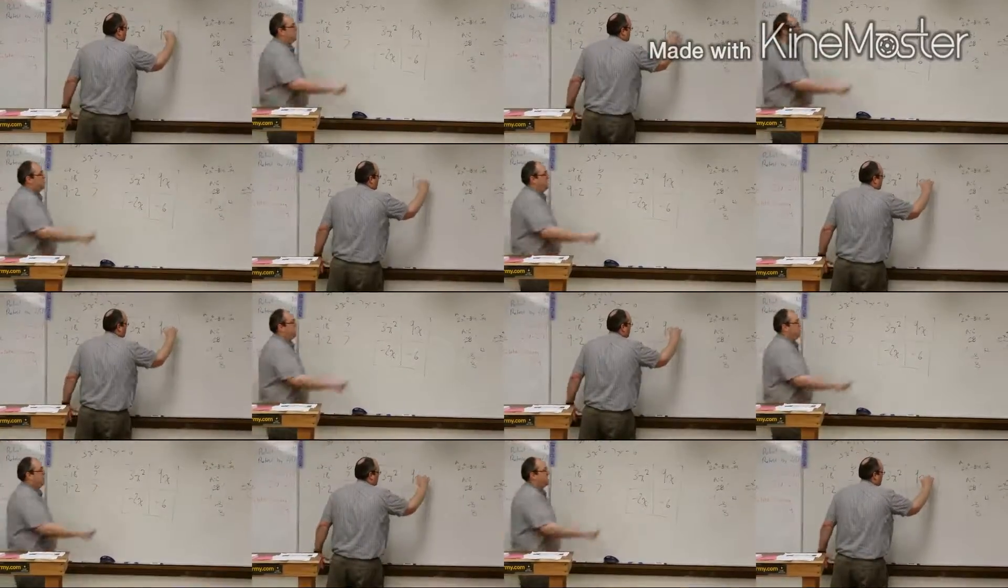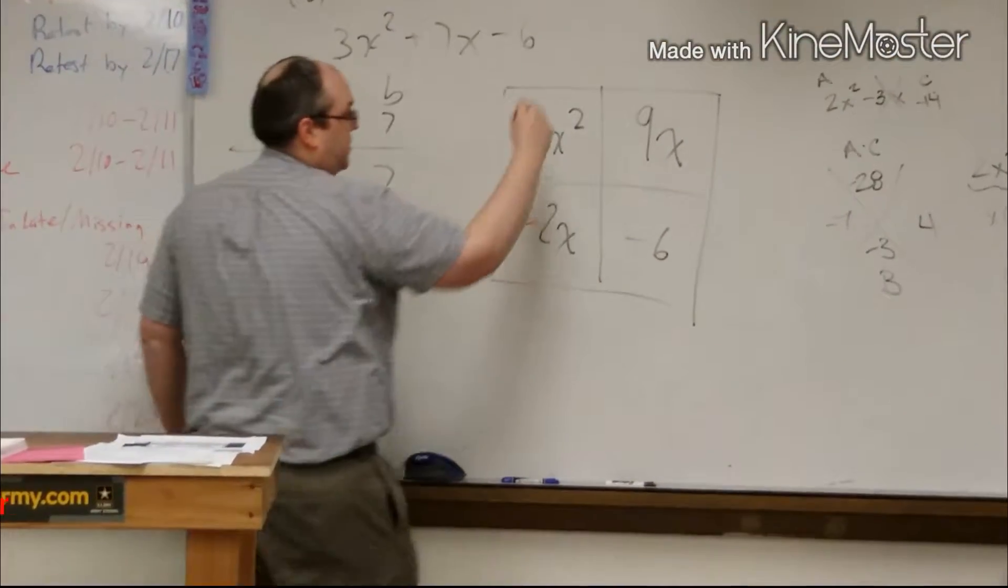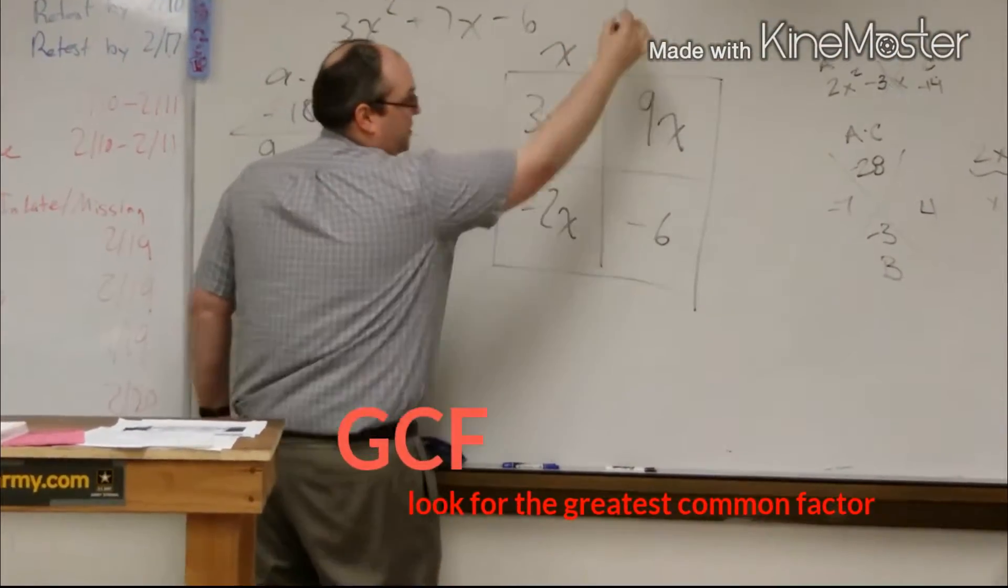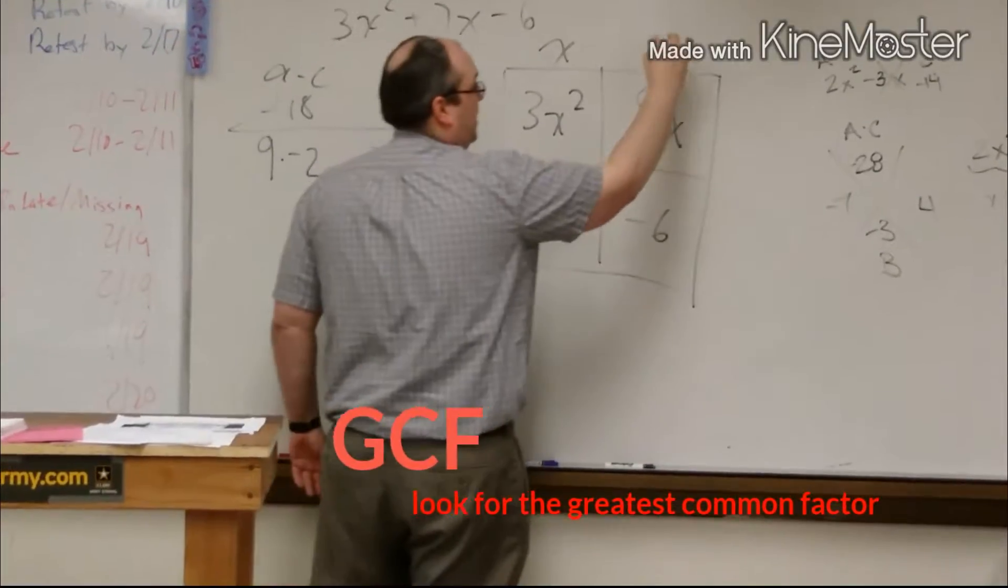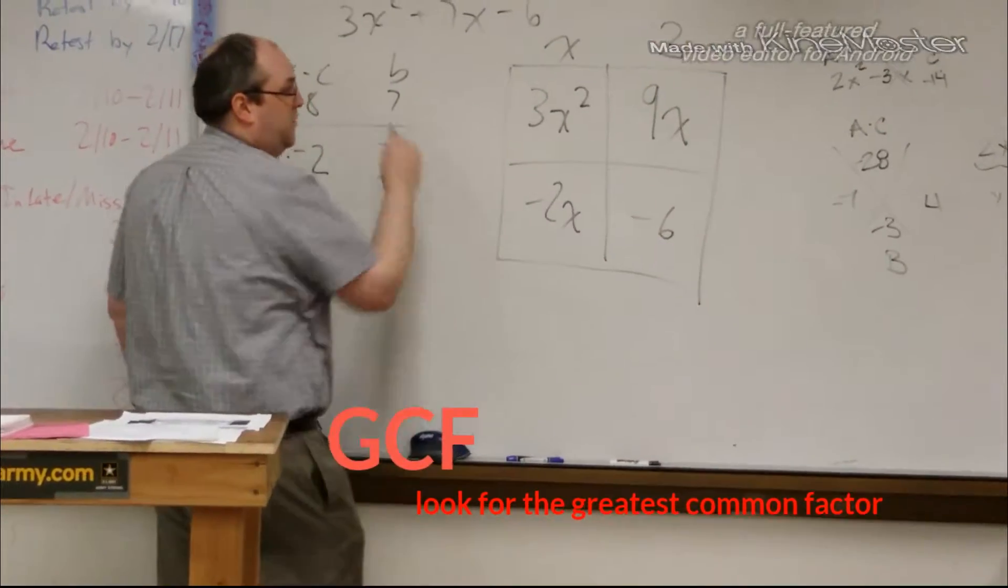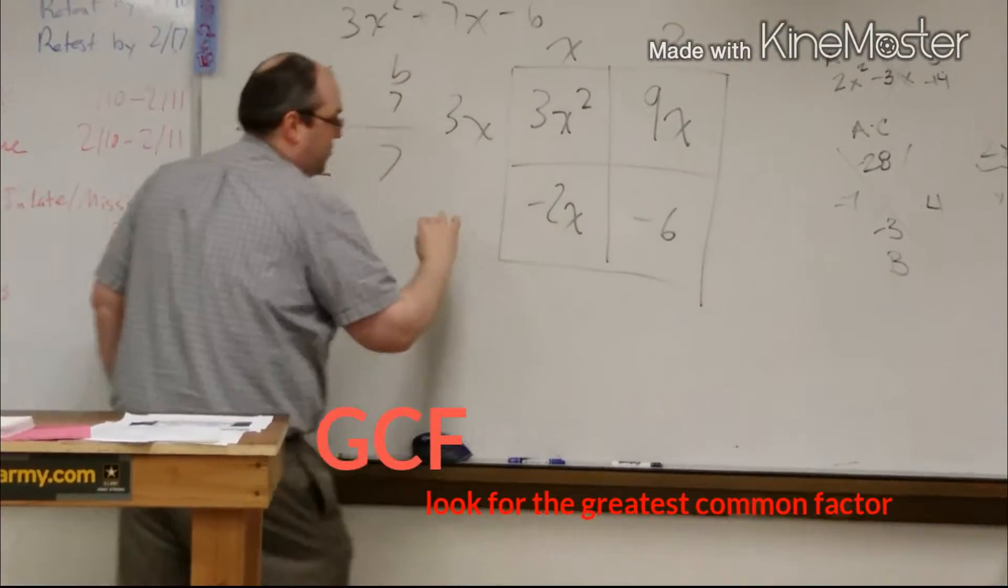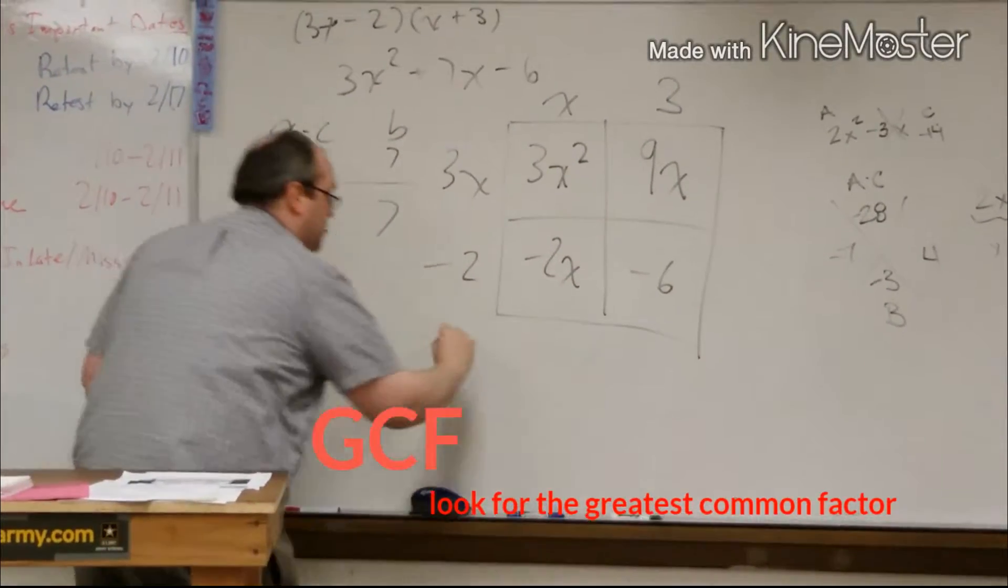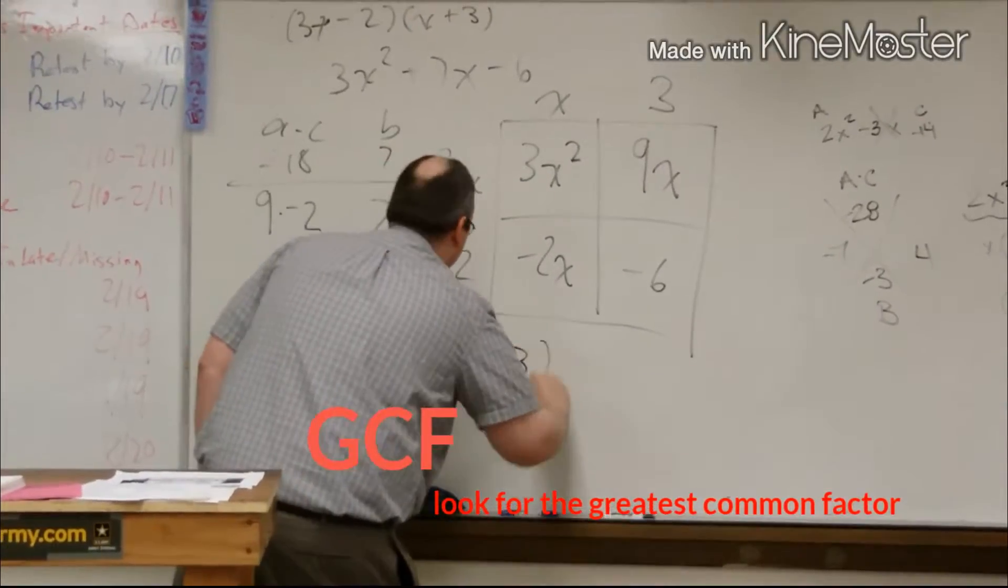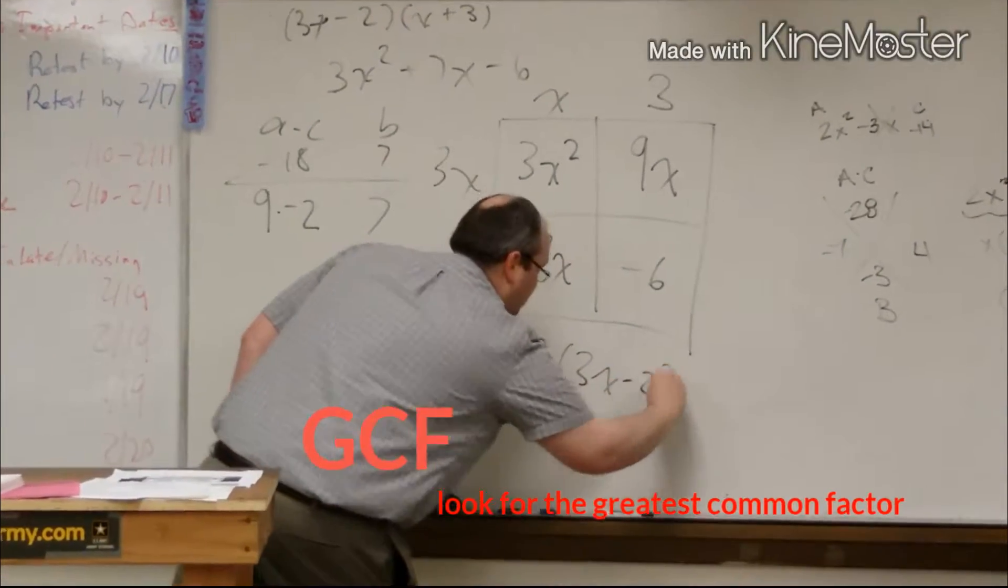Look at the greatest common factor in the first column, which in this case is x, the greatest common factor in the second column, which in this case is 3, the greatest common factor in the first row, which is 3x, and the greatest common factor in this row is negative 2. So the factors are x plus 3 and 3x minus 2.